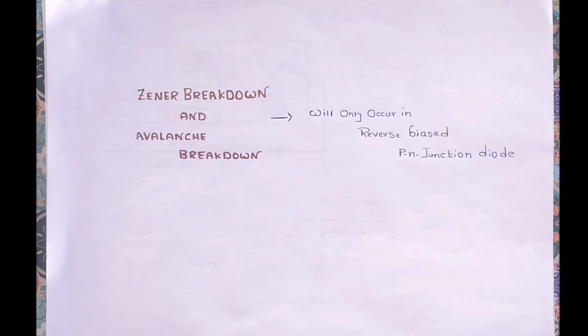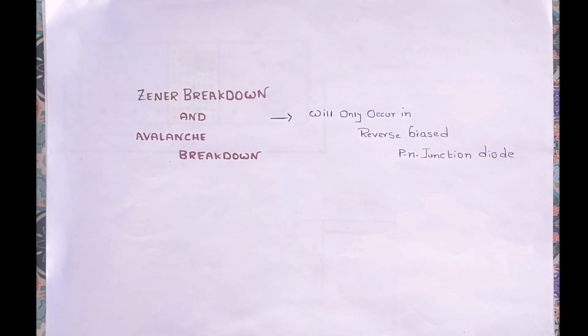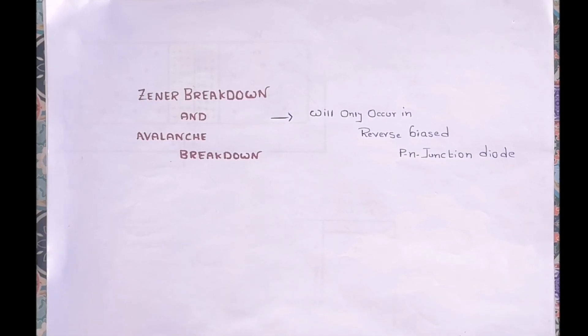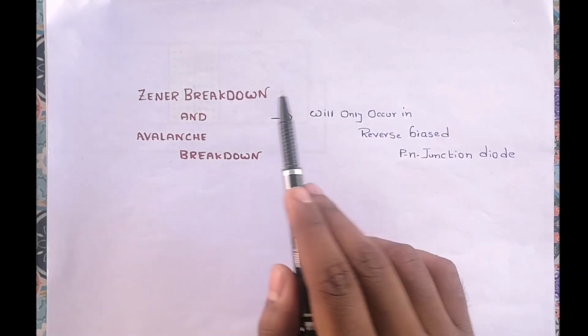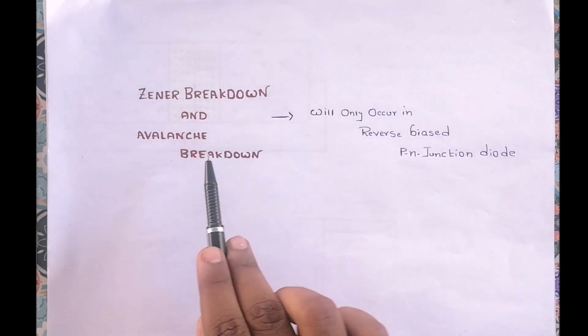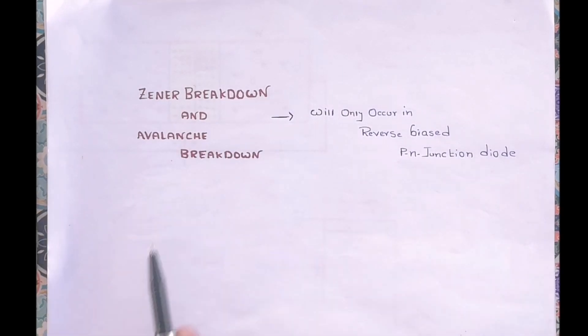Hello friends, welcome to our channel Electronic Stuff. In my previous video we have seen the VI characteristics of PN junction diode, and today in this video we are going to understand about Zener breakdown and avalanche breakdown.